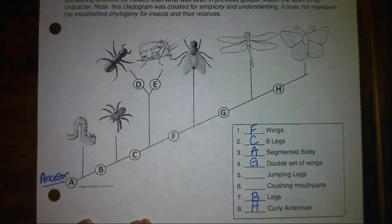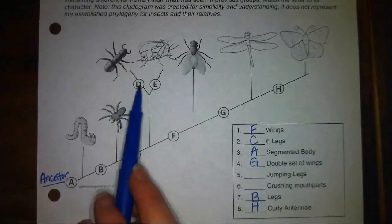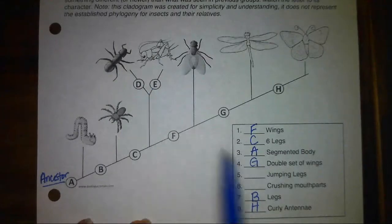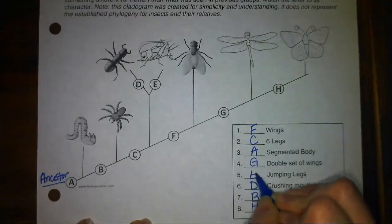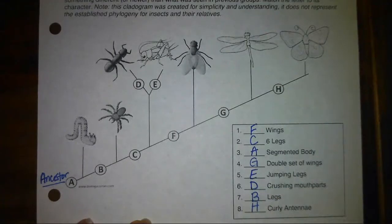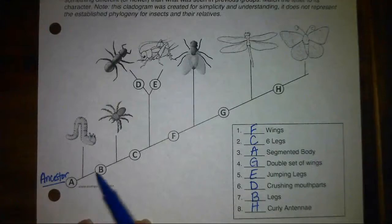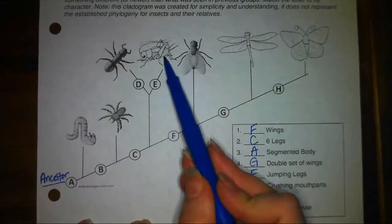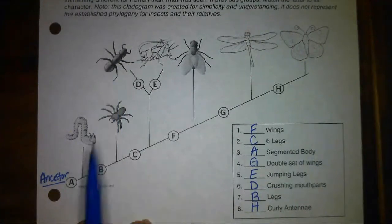Going back to the last two traits — we have jumping legs and crushing mouthparts. This is a very simplified example, so it should be pretty easy to figure out. We have crushing mouthparts as trait D, and jumping legs as trait E. So the organisms on this branch have traits A, B, C, and E going up to that organism, and D going up to that insect. That's the front of the cladogram.